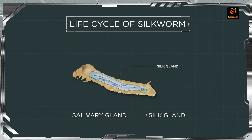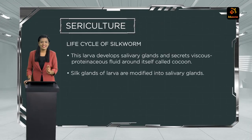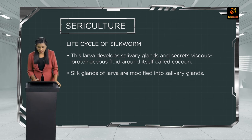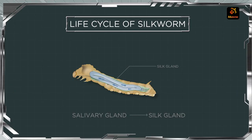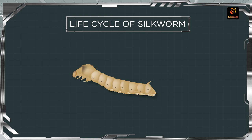One of your MCQ questions — they were initially called as the salivary glands, but now they will be called as the silk glands. These silk glands are going to secrete a proteinaceous and viscous fluid. It is this fluid which is going to weave the cocoon around the worm.